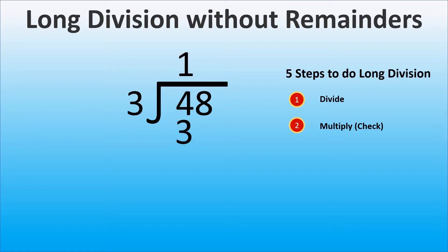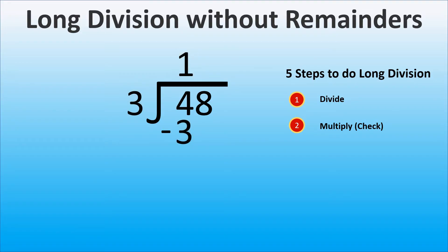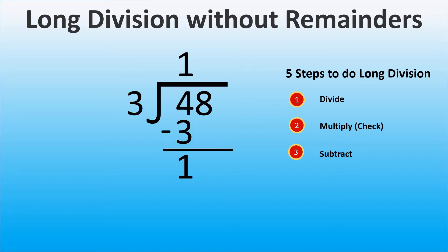Next, we multiply to check. 1 times 3 is 3, and as we did everything correctly, we can move to the next step: subtraction. 4 minus 3 is 1, and we move to the next step. In step 4, we bring down the next number, 8, in our example.